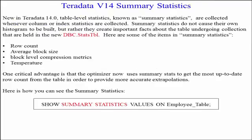Teradata V14 summary statistics. New in 14.0, table-level statistics known as summary statistics are collected whenever column or index statistics are collected. Summary statistics do not cause their own histogram to be built, but rather they create important facts about a table undergoing collection that are held in the new DBC.Stats table. Items in summary statistics include the row count, average block size, block level compression metrics, and temperature.